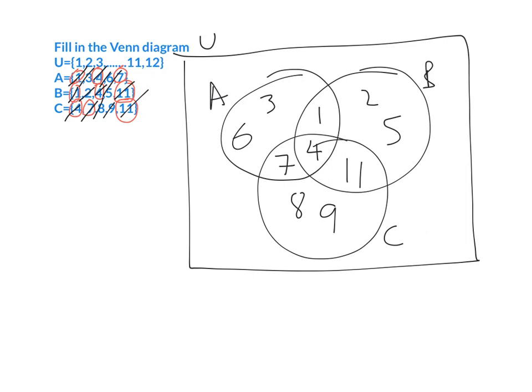The last step is we need to make sure we've filled out everything from our universe, which goes between one and twelve. I'm just going to do a quick check: one, two, three, four, five, six, seven, eight, nine — no ten. So ten goes on the outside. We've got eleven. Do we have a twelve? No. So that also goes on the outside.